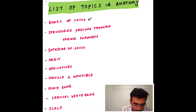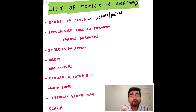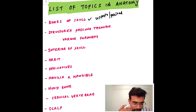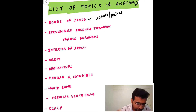The first topic is the bones of the skull — the unpaired and paired bones. You should be aware of all those and their communicating aspects. The paired bones include parietal, temporal, frontal, and ethmoid. You have to know about the communicating aspects of each bone and their ossifications. The next topic is the structures passing through each foramen.